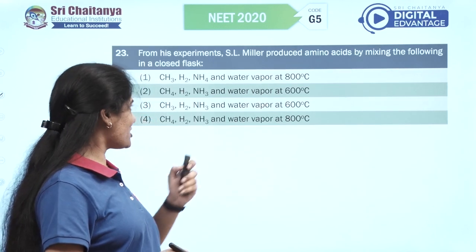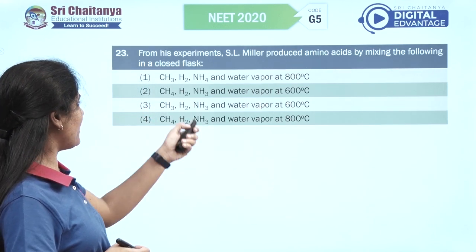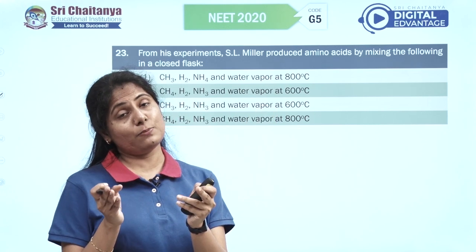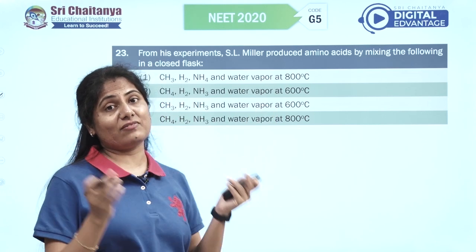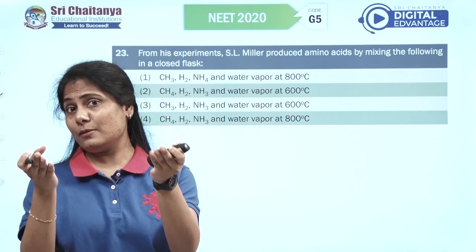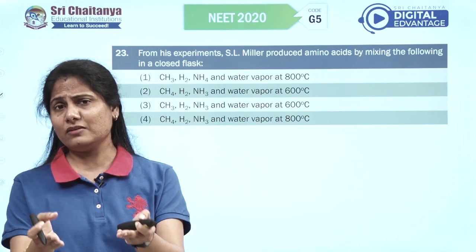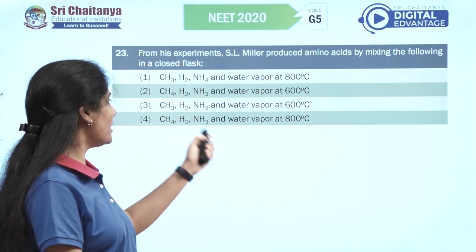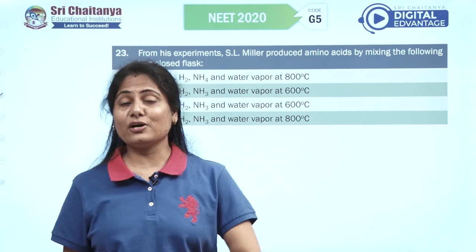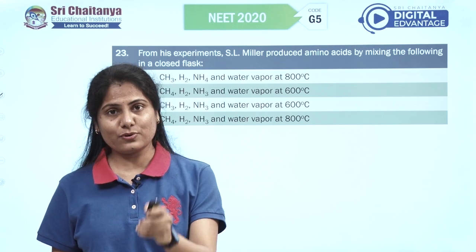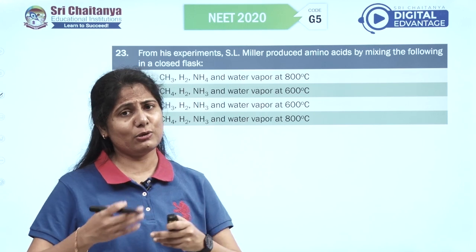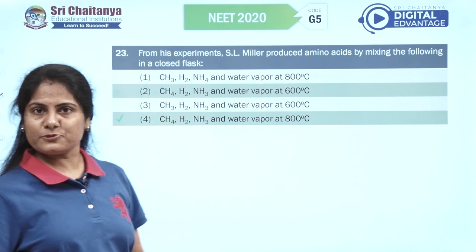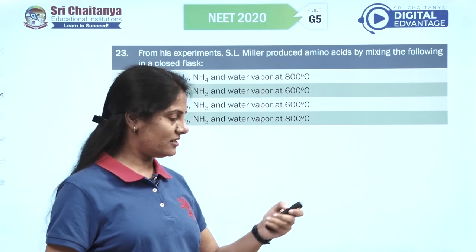From his experiments, Urey-Miller produced amino acids. Miller's experiment from the evolution chapter used methane, hydrogen, ammonia, and water vapour at 800 degrees centigrade — simulating the primitive atmosphere. The fourth option is your right answer.